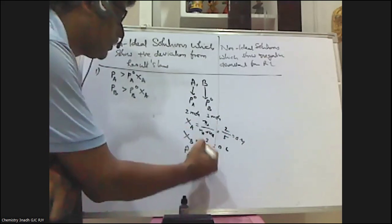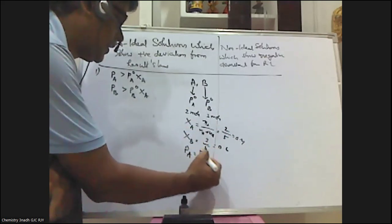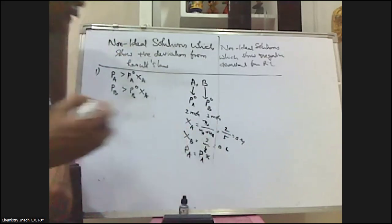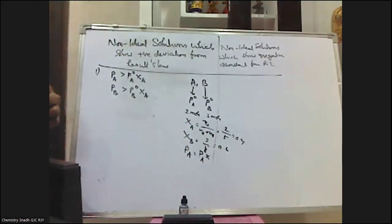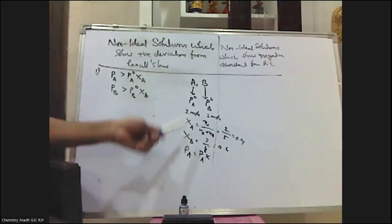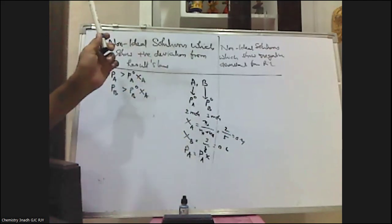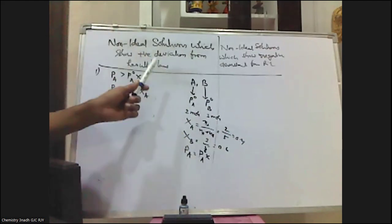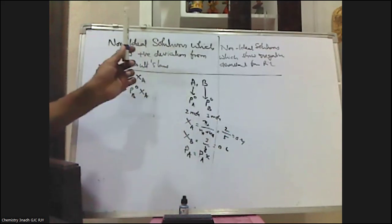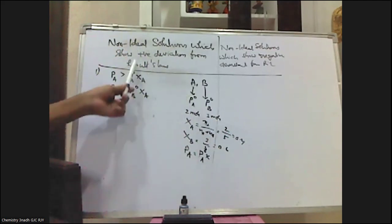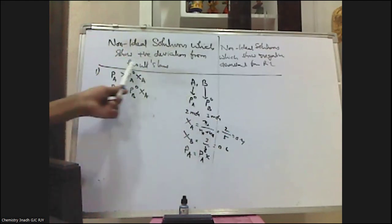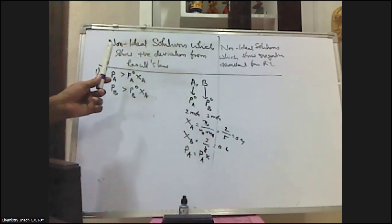Now I can calculate, using Raoult's law: if I know PA⁰, I can calculate the partial pressure of A in solution as PA = PA⁰ × XA. Similarly, I can calculate the partial pressure of B in solution as PB = PB⁰ × XB. These are the values calculated using Raoult's law.